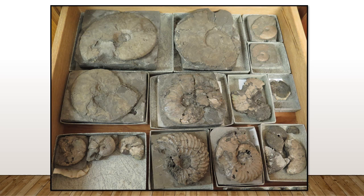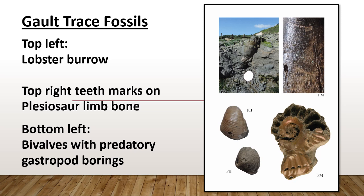Now let's look at some fossils from the Gault Clay. The Gault is very different — it's definitely an entirely marine formation. Here's a drawer of fossils at the Oxford University Museum of Natural History: ammonites from the Gault Clay. Here are some Gault Clay trace fossils. I should note it's officially known as the Gault Formation, but at Folkestone it's a clay so we call it the Gault Clay. One of the best trace fossils is an ammonite with teeth marks where it was probably attacked by a fish.